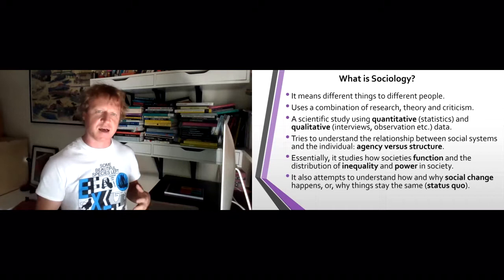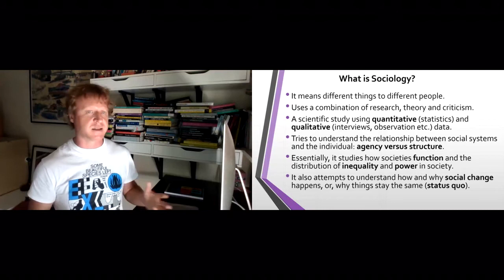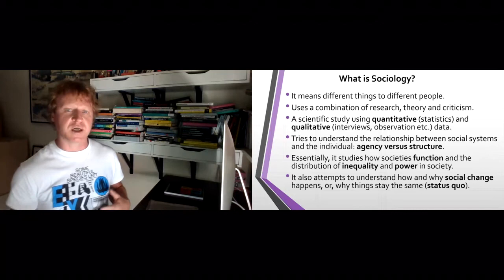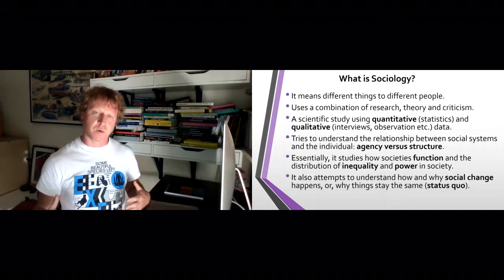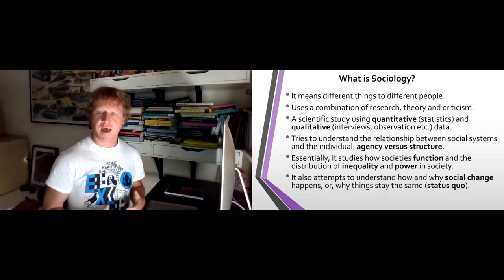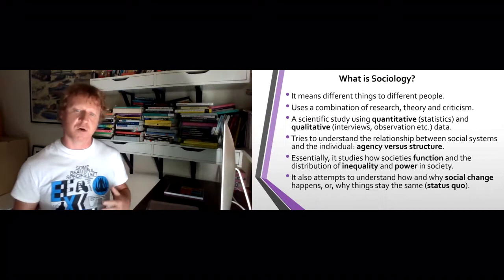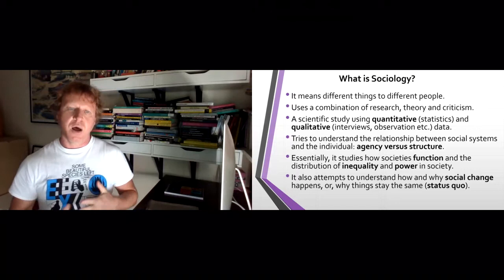Some people do large-scale quantitative statistics, surveys and so on. Others do interviews, observations in workplaces, participatory research where the researcher takes part in what they're researching, or gets research participants to create things to express what they're researching. Importantly, what sociology tries to do is a scientific study of the world to observe how things function, how societies work or not, what could be more efficient or less efficient, what could be more fair and equal. The distribution of inequality and power are particularly important objects of study in sociology.